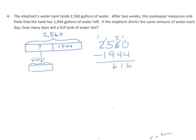How long does it take to consume the 616? It takes two weeks, so we're going to find out how much is consumed each day. We know that 14 units — because we have 14 days — equals 616, and we want to find one unit. We can take this and divide it into equal parts because they have the same amount each day. Label this 1, 2, and 14. We have the whole, we're dividing it into 14 equal parts, so 1 unit is 616 divided by 14.